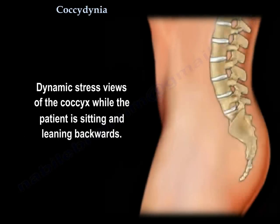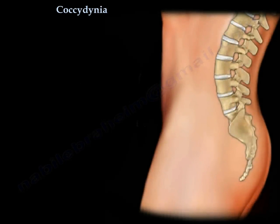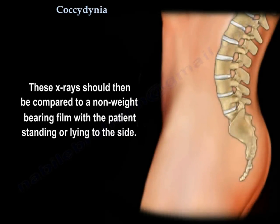Dynamic stretch views of the coccyx are taken while the patient is sitting and leaning backwards. This X-ray should then be compared to a non-weight bearing film with the patient standing or lying to the side.